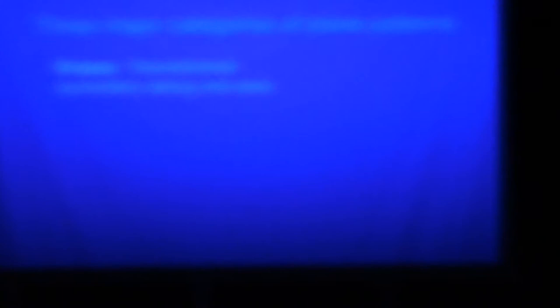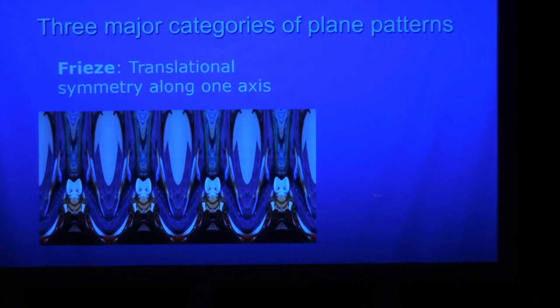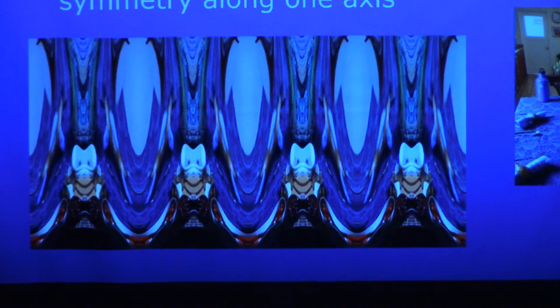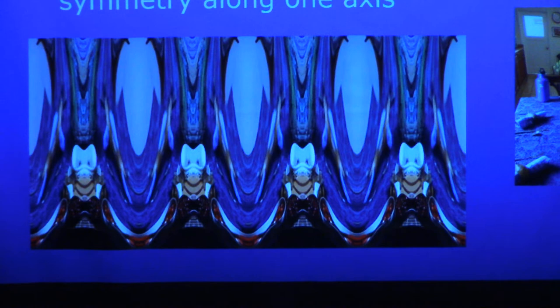The second category of plane patterns is friezes. A frieze is where all of the symmetry, the translational symmetries all proceed along one axis. So here, left and right. And yes, I'm inviting you to use your wonderful visual cortex to realize that beyond here, there is another cycle of this pattern and another and another. And likewise, back this way too. So this was made from a photograph of my living room before a party with a bowl of cherries and strawberries on the table.